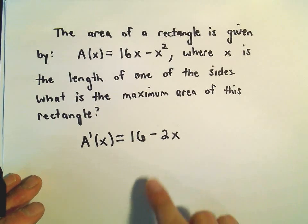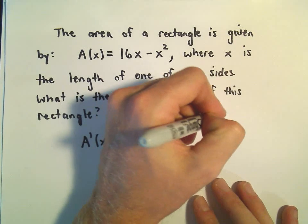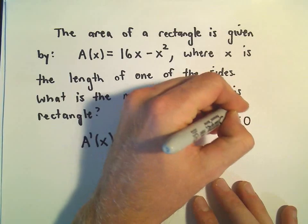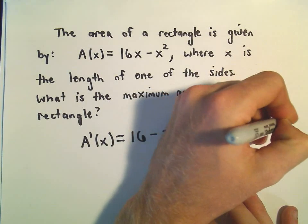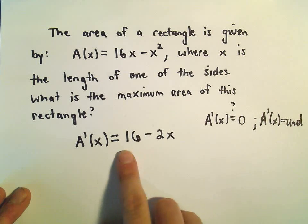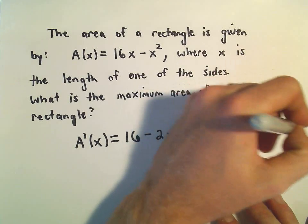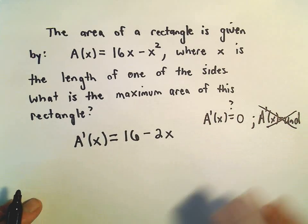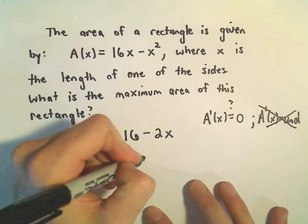And same thing as in the previous example. We want to figure out where the derivative equals 0. So we've got to solve that equation. And then we also want to think about where the derivative is undefined. Well, for this type of problem, 16 - 2x, this is defined for all x, so we really don't have to worry about this scenario happening. But we can take the derivative and set it equal to 0.